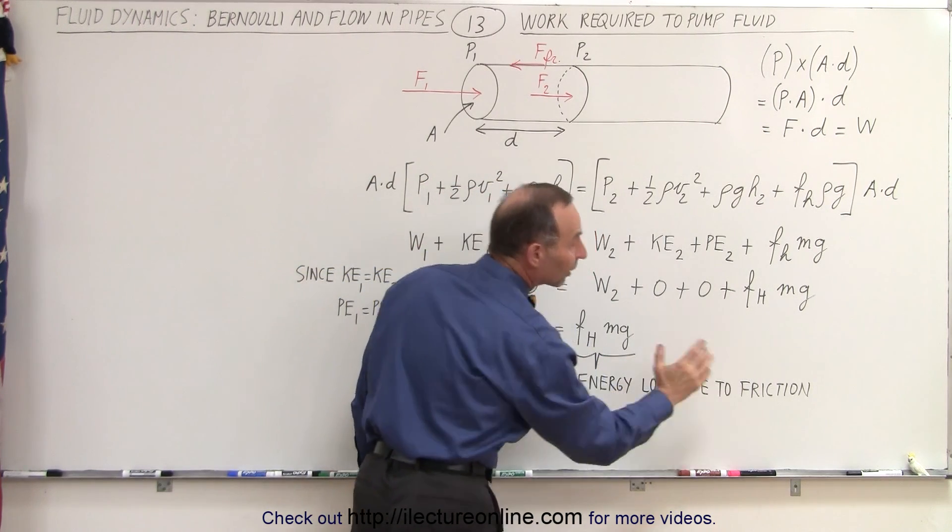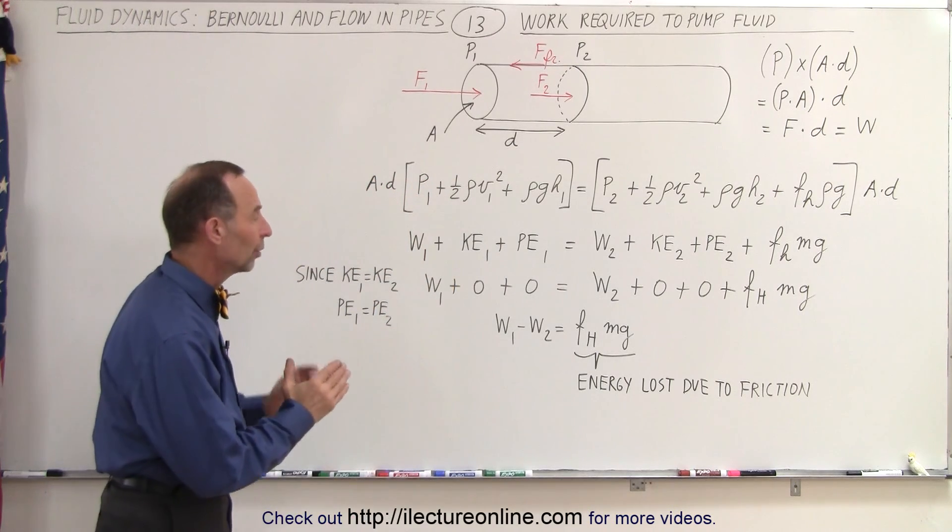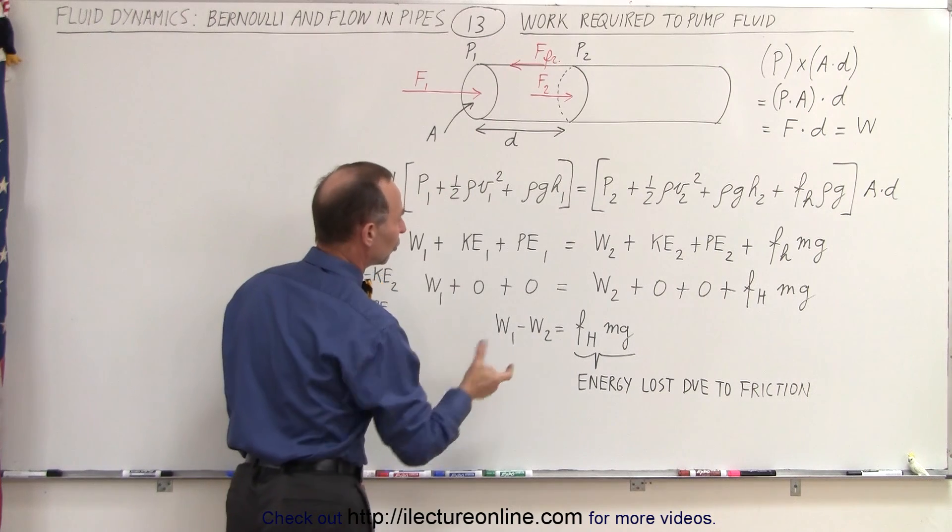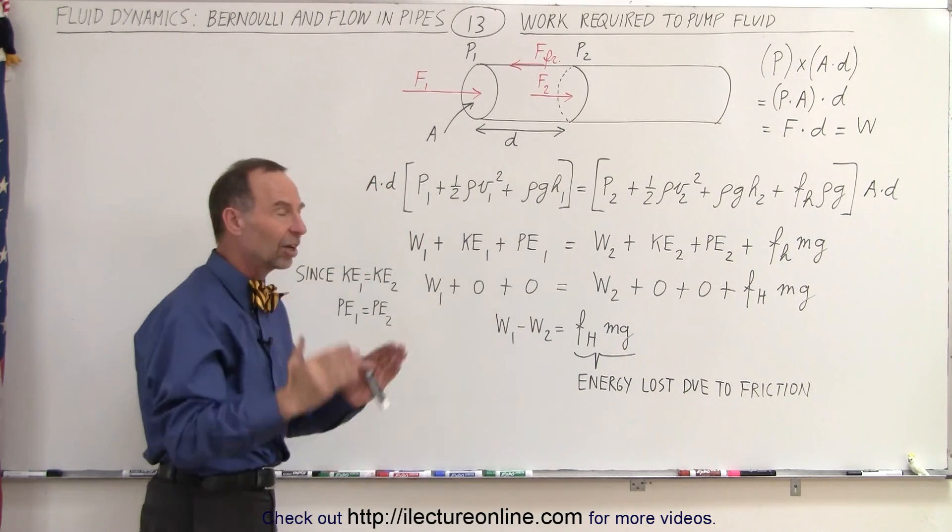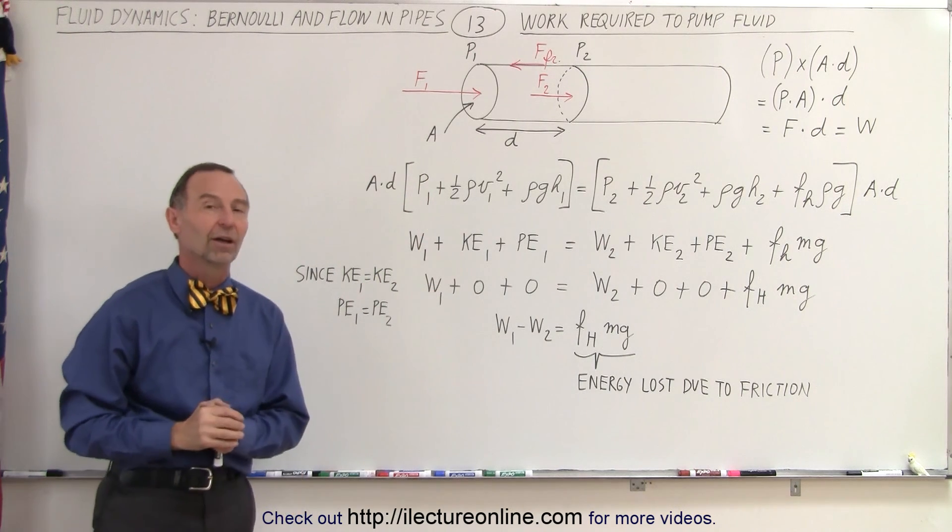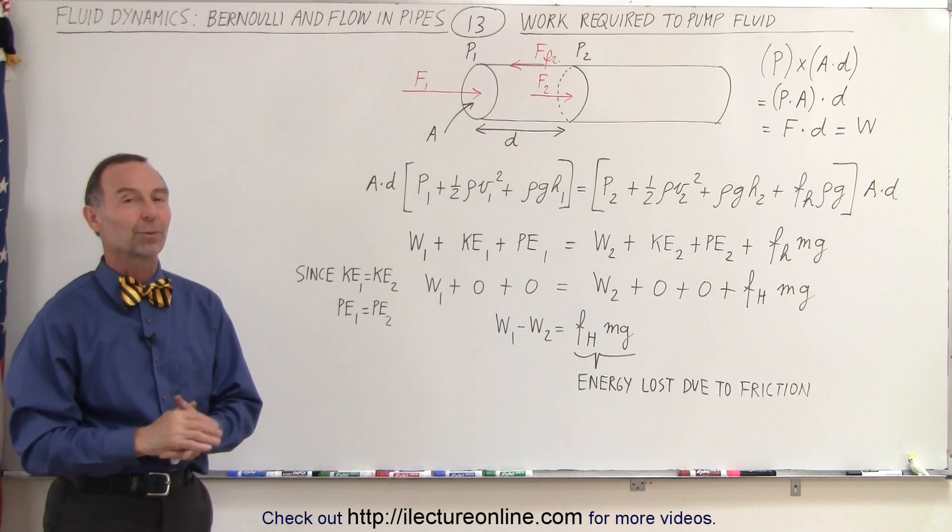I keep calling it water and fluid but assuming that it's water, and therefore this term right here represents the energy loss due to overcoming the friction and that will then be the extra work done by w1 compared to w2, so the difference in the work done in any section equals the energy loss by overcoming friction in that section of the pipe and that's how it works.